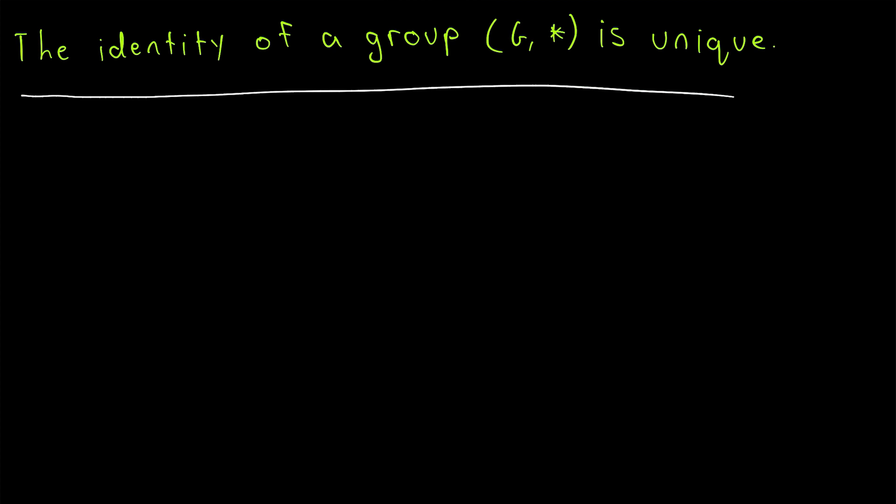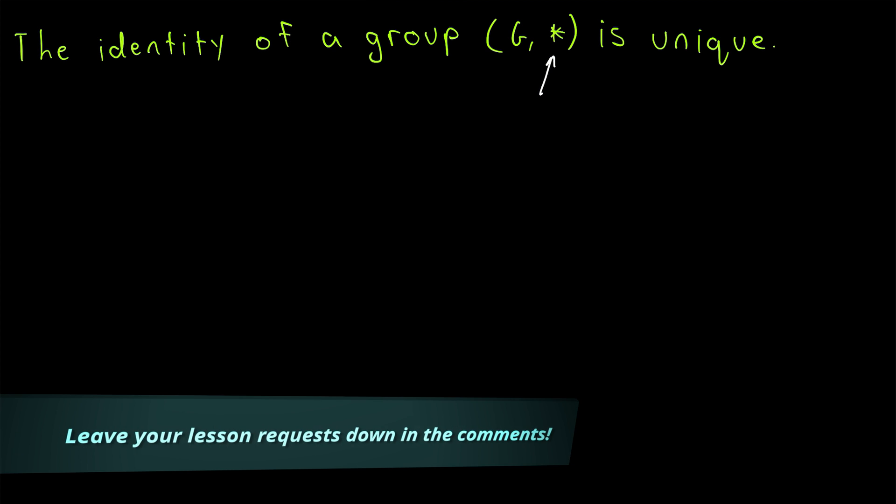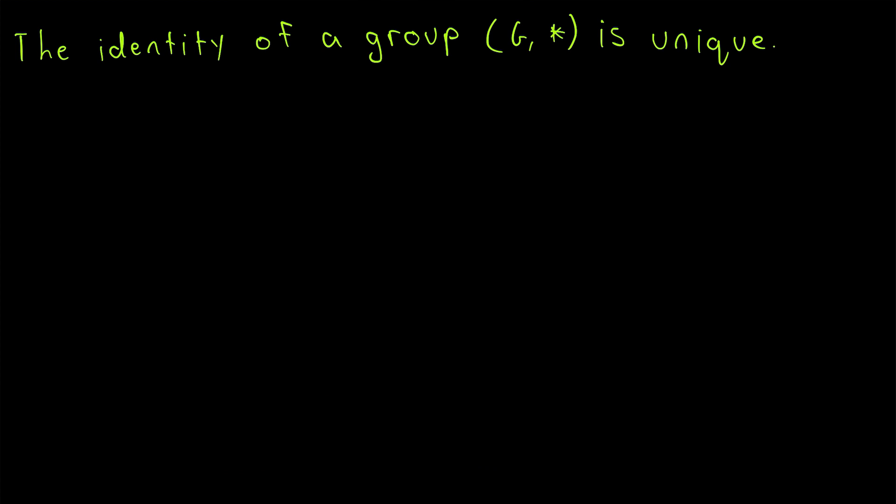How do we prove that the identity of a group is unique? This is our group, some binary operation star on some set G. This is one of the first results you're likely to prove in an abstract algebra course. In today's Wrath of Math lesson, we'll go through this quick proof.